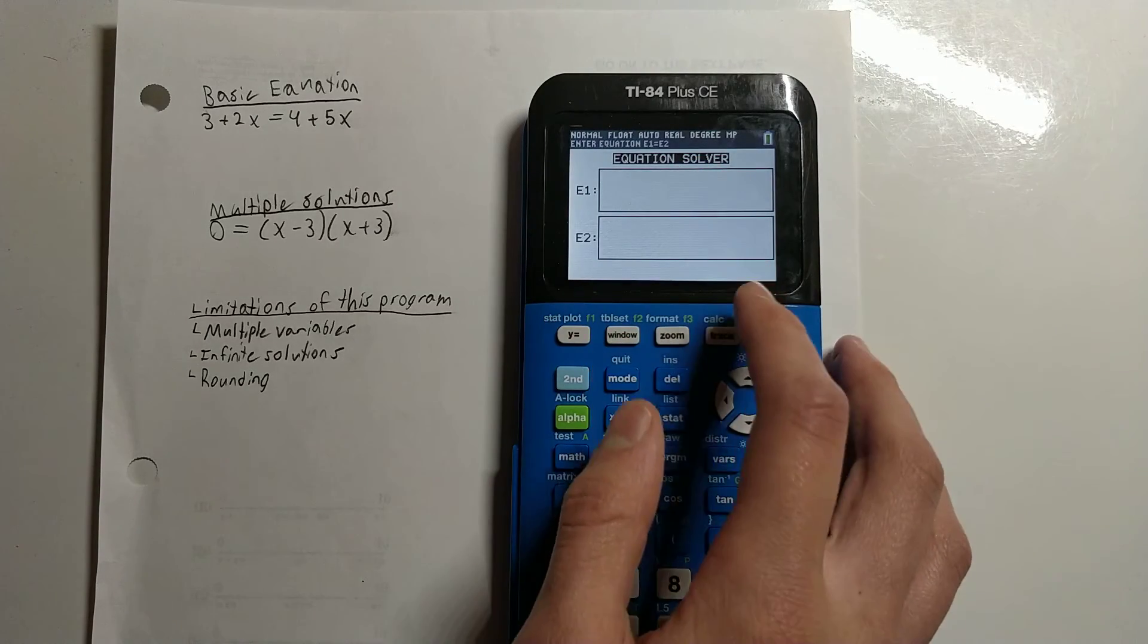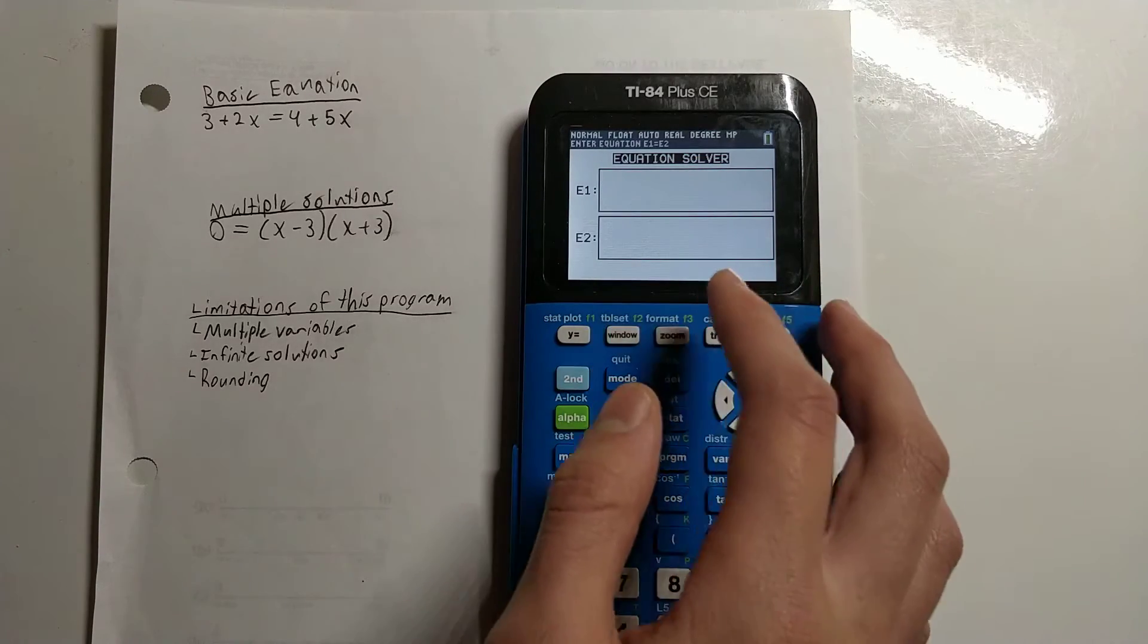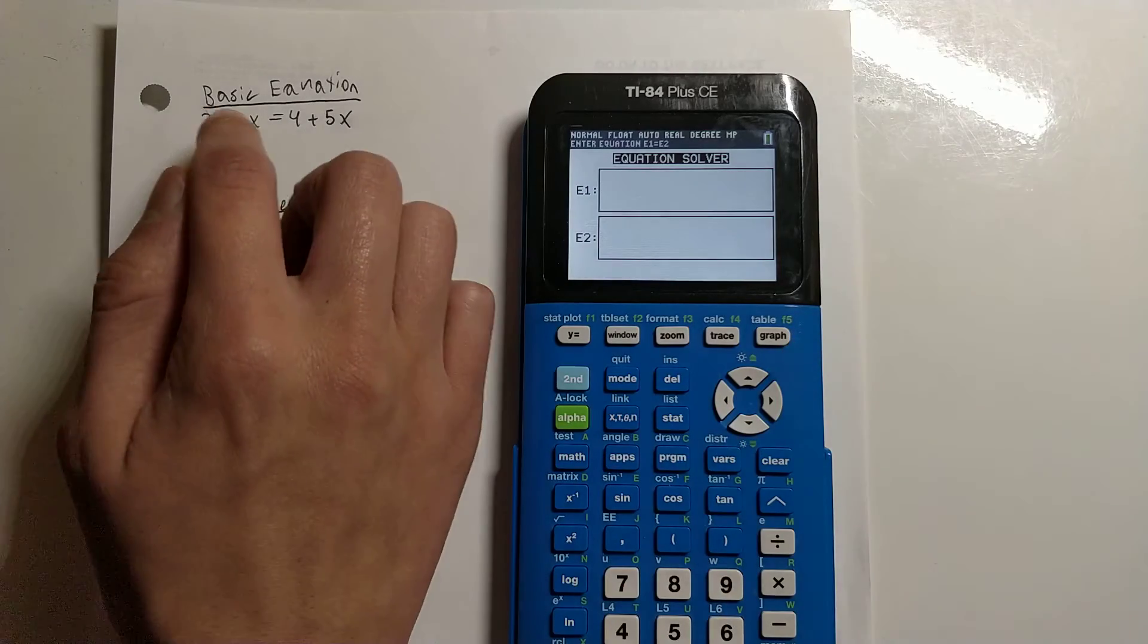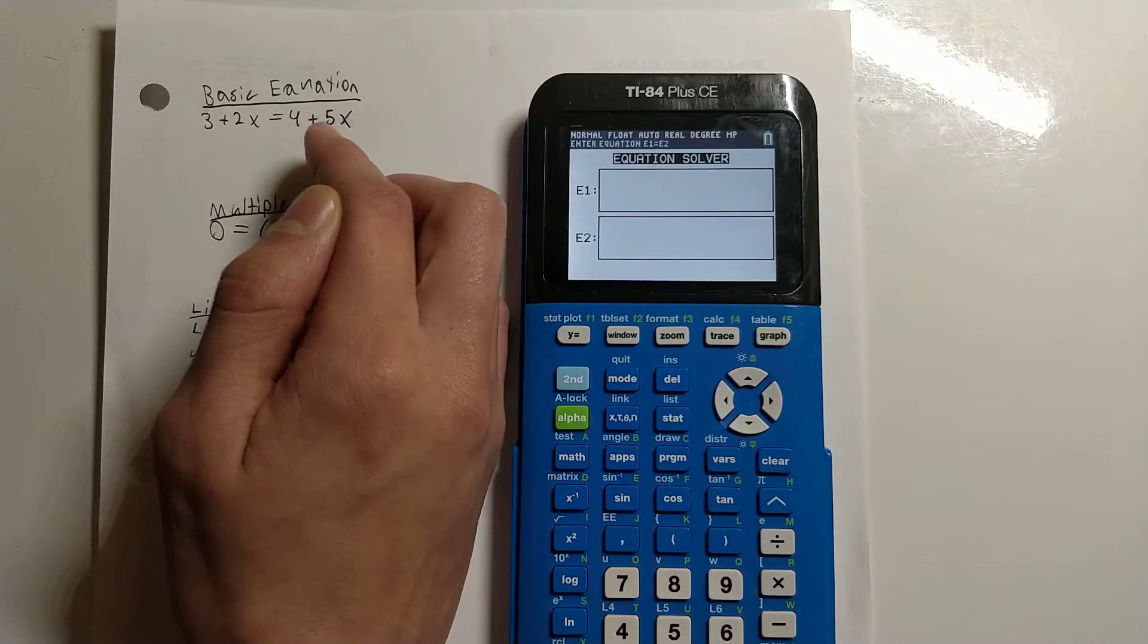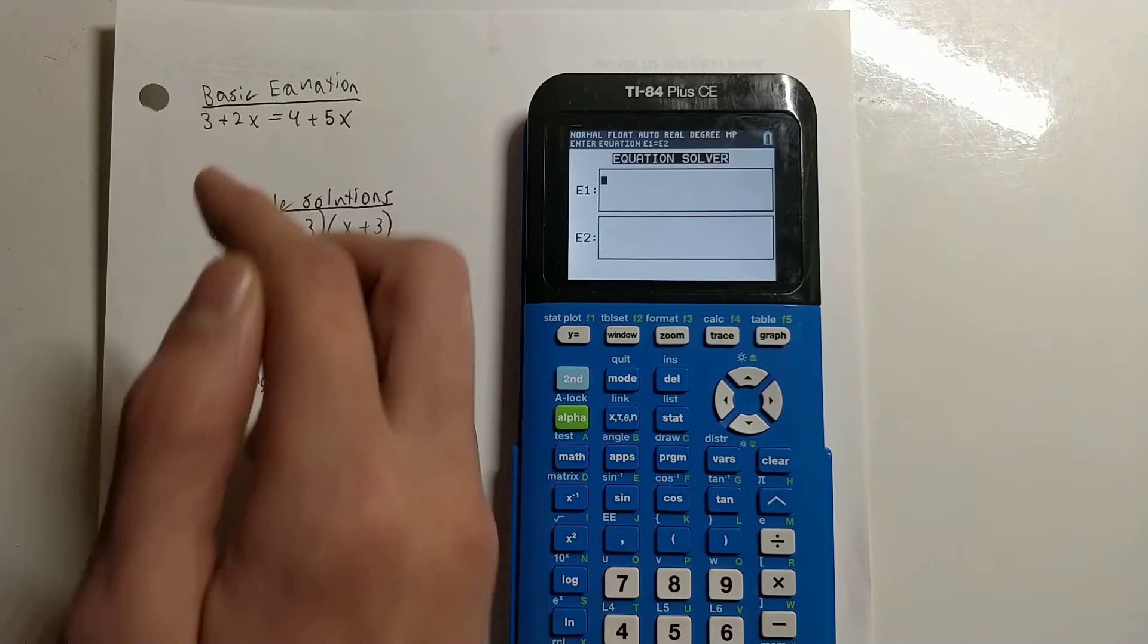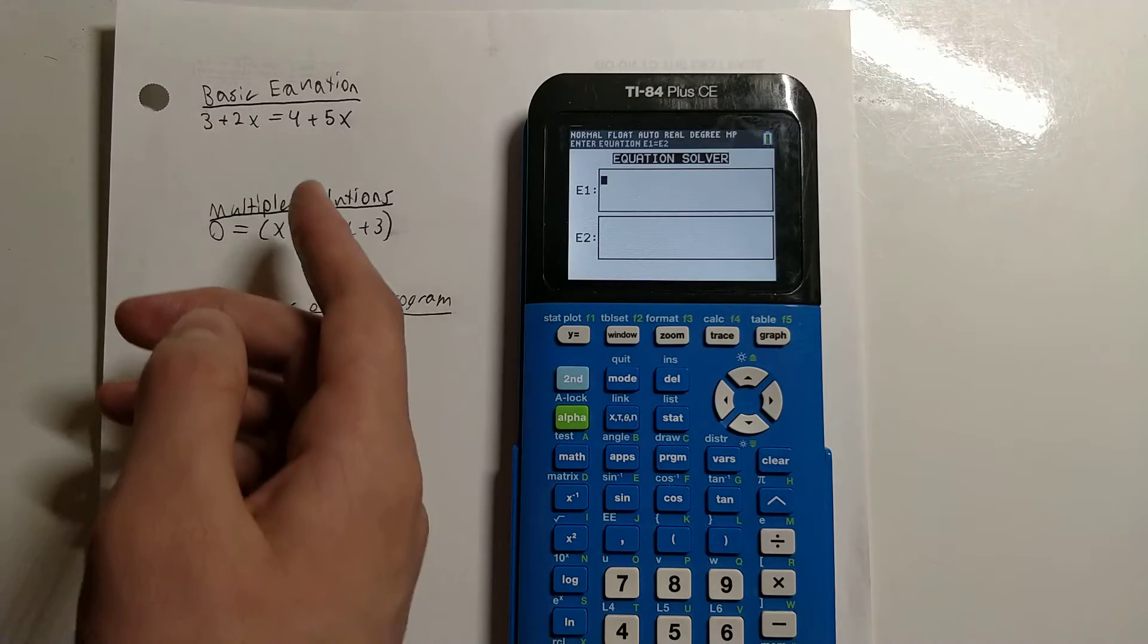E1 and E2, the two boxes here, basically represent the two sides of the equation. So in 3+2x=4+5x, 3+2x would be one side and 4+5x would be the other side. Let's go ahead and type those in.